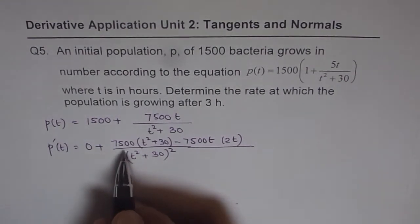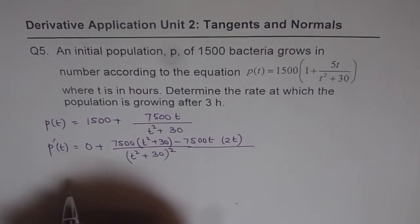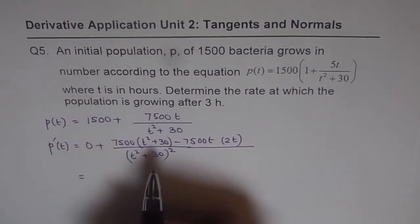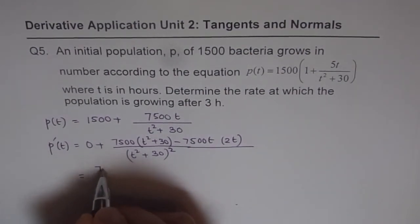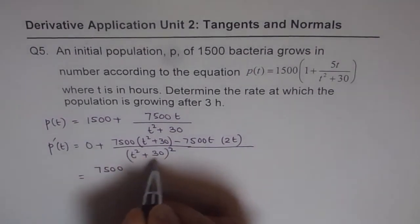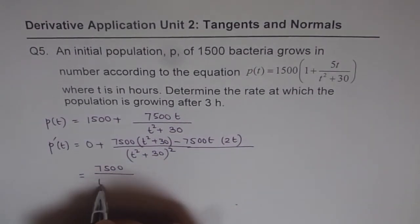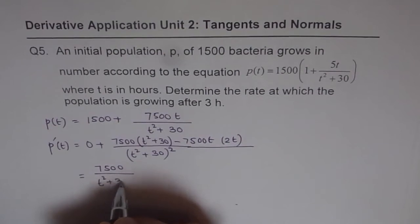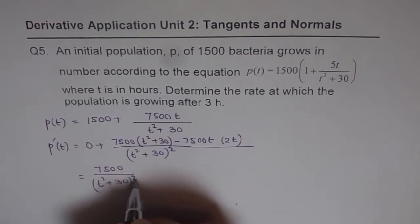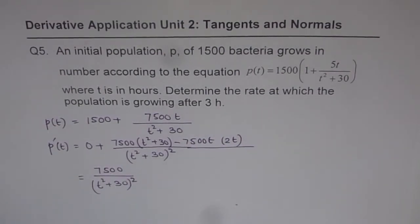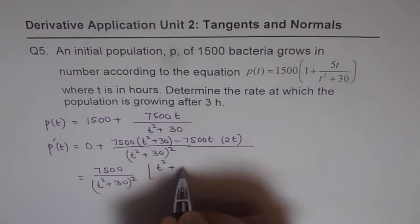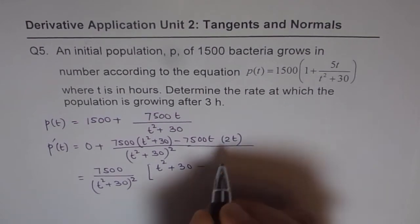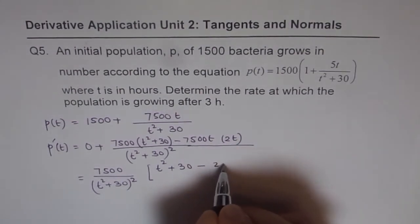And now we can expand and simplify this. So we can take 7500 common. So let's take 7500 common. The denominator for us is t squared plus 30 whole square. So that is the denominator. So when you take 7500 common, you are left with t squared plus 30 minus 2 times t squared.